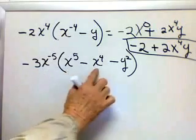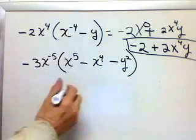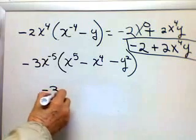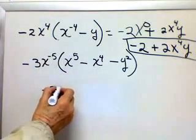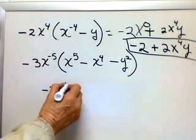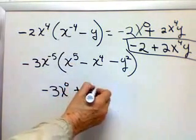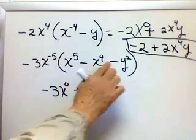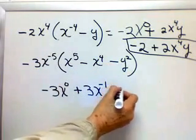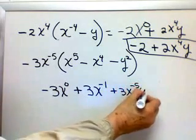So again, I'm going to distribute. This time I have three things to distribute to. So -3 times the coefficient 1, I get -3. Then the variables, I add the exponent, I get x^0. And then negative times negative is positive 3, x^-1. Then here, I get positive 3, x^-5, y^2.